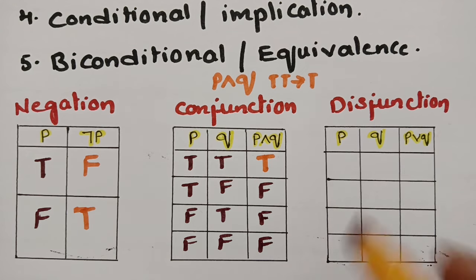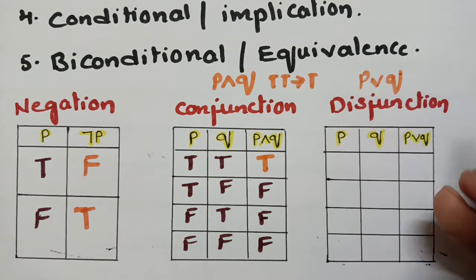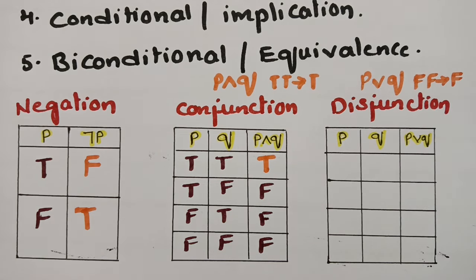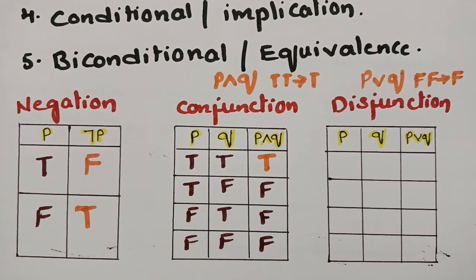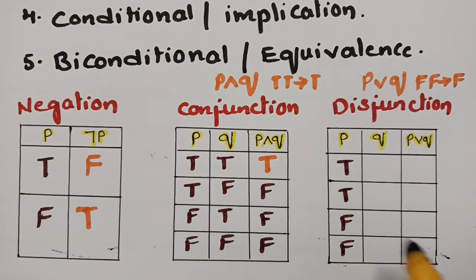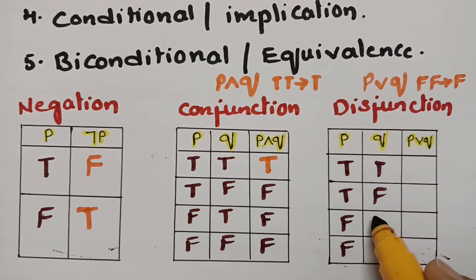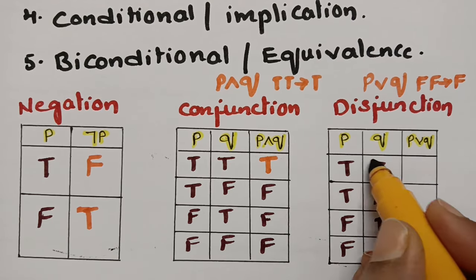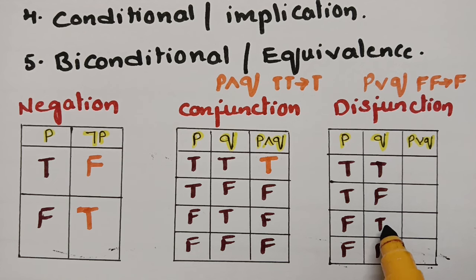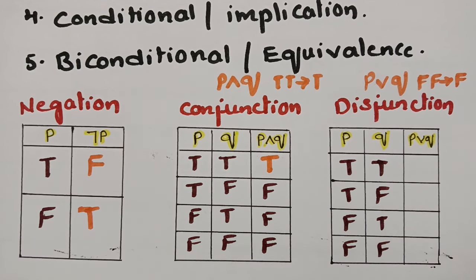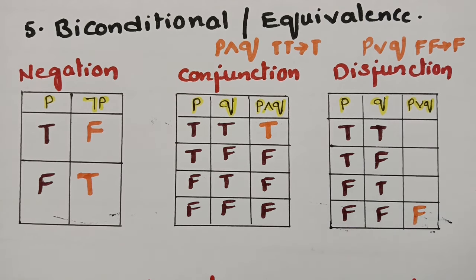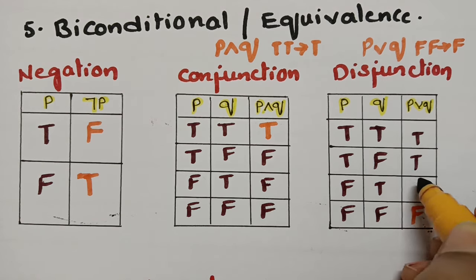Disjunction is P or Q. Blindly follow this: if there are two false values, obviously the result will be false. Filling the truth table: statements are true, true, false, false and true, false, true, false. Wherever you find true and false, immediately write false. The rest are all in the opposite direction: true, true, true.